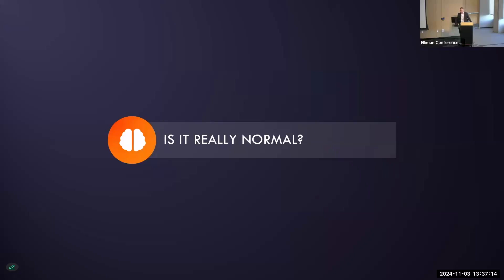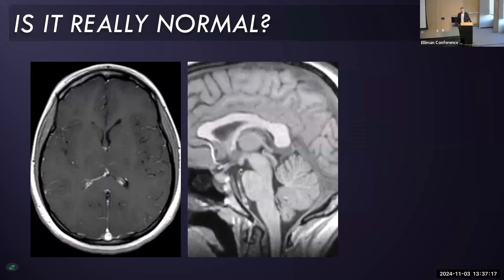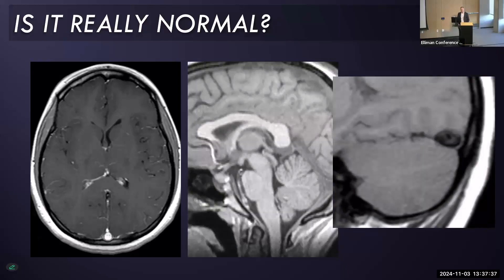So — brain imaging: is it really normal? This is a case of a patient we saw whose brain imaging was reported as normal. There's really not much in the way of dural enhancement, and the burn score wouldn't be particularly impressive, but this patient did have a dilation of the transverse sinus. Sometimes this can be a relatively subtle sign and may be the only sign of intracranial hypotension.